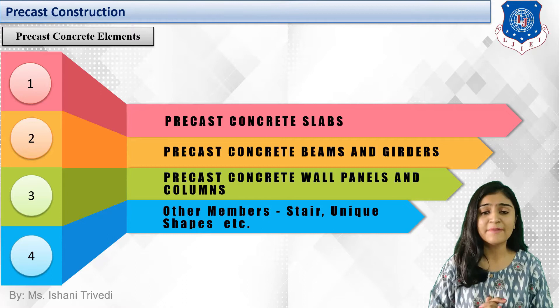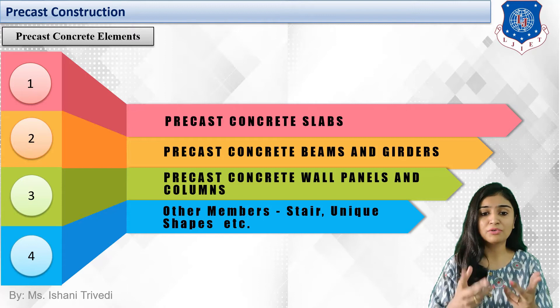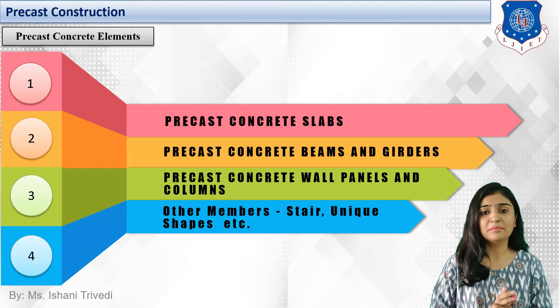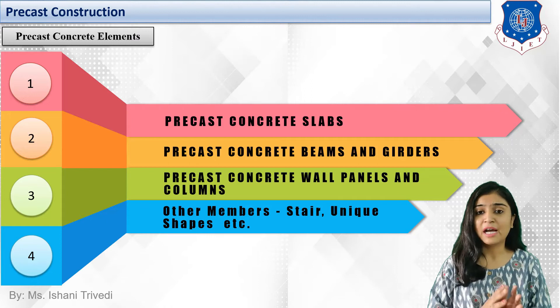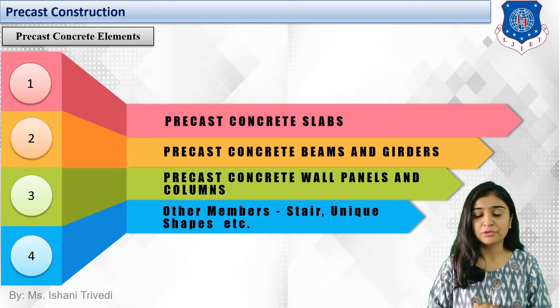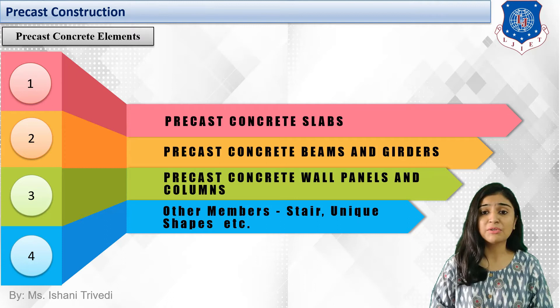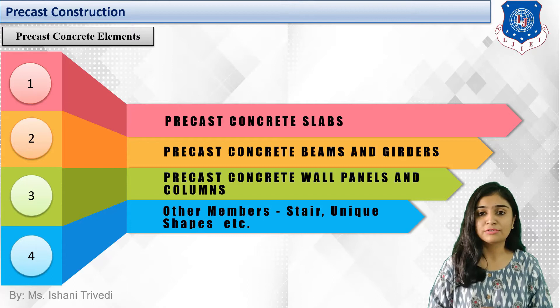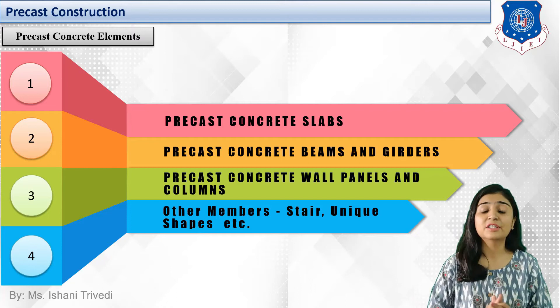Wall panels come in vertical sections. I showed an image of precast concrete wall panels in the previous session — how they are constructed with opening spaces left for doors and windows. The fourth category is other members, which includes miscellaneous ones: stairs, unique shapes, circular or asymmetrical structural forms. Stairs fall in the miscellaneous category, though there are lots of drawbacks regarding the precast staircase.